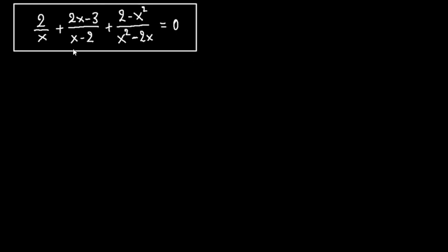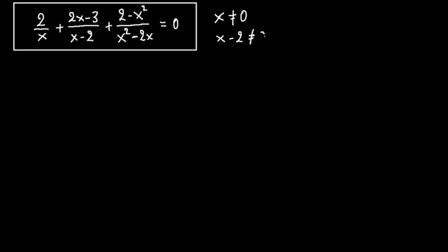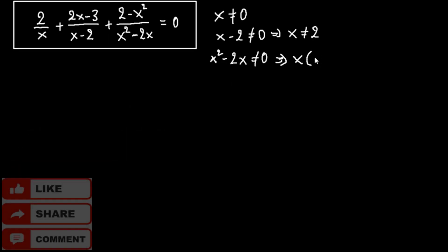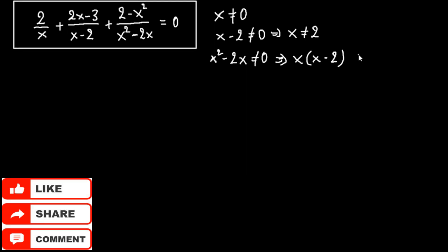The first thing we want is that the denominators are not equal to 0. From the first fraction, x must not equal 0. From the second fraction, x minus 2 must not equal 0, so x must not equal 2. From the third fraction, x squared minus 2x must not equal 0, which can be written as x times x minus 2 must not equal 0.